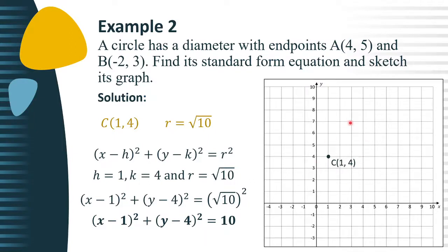Then after that, on the axis, plot the 4 points of the circle using the given radius. In our problem, we have square root of 10. So this is the distance from the center. Then after that, connect the 4 points to form a circle.